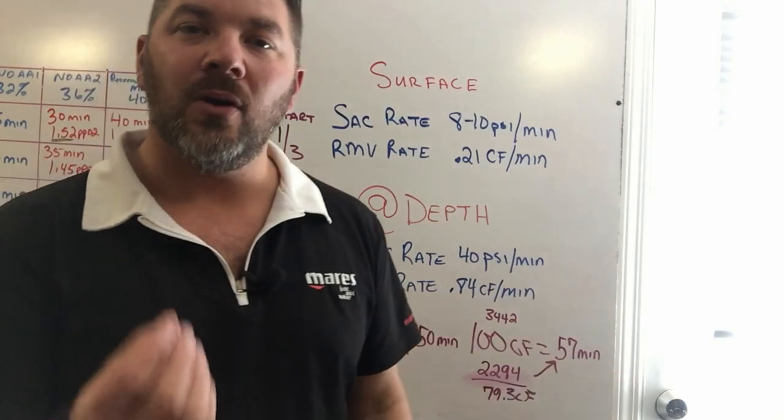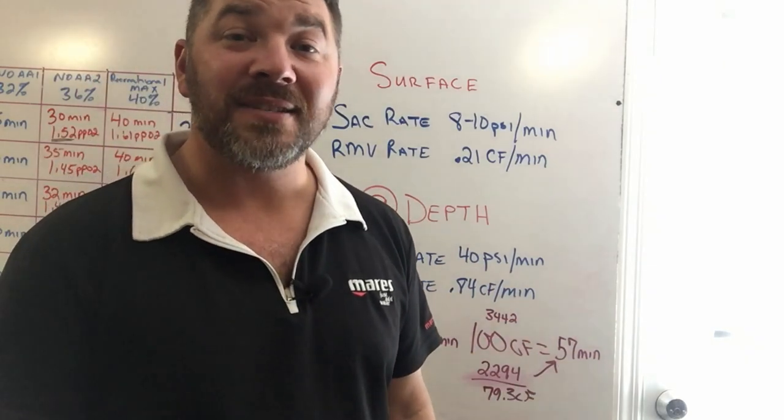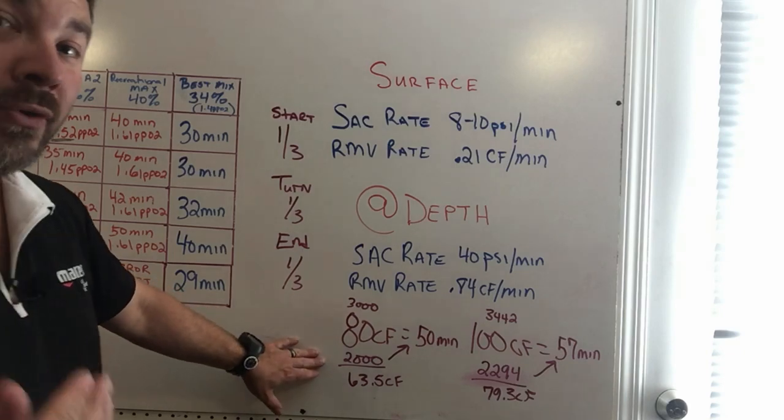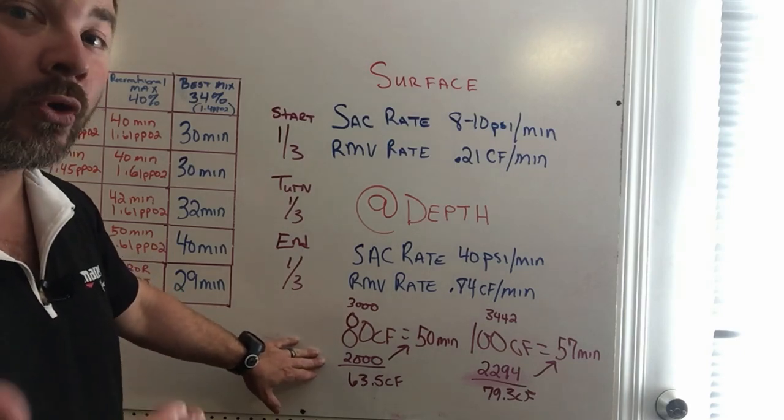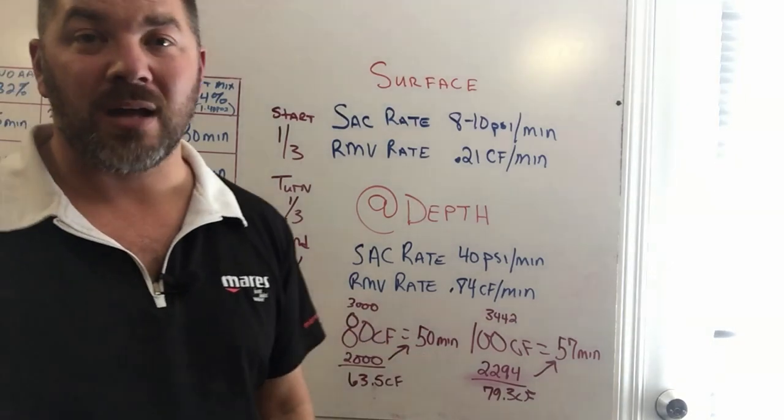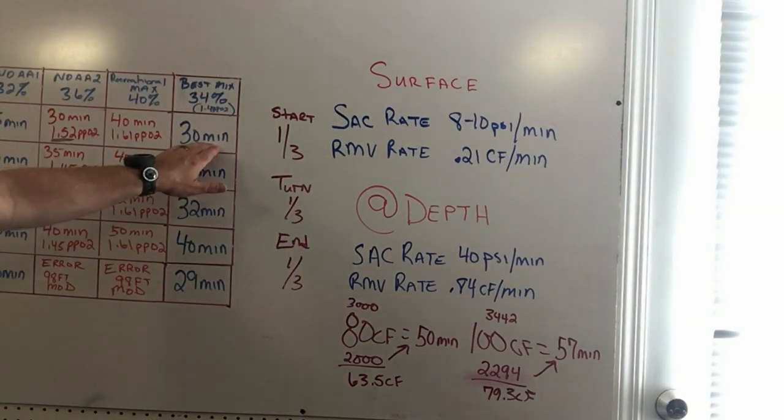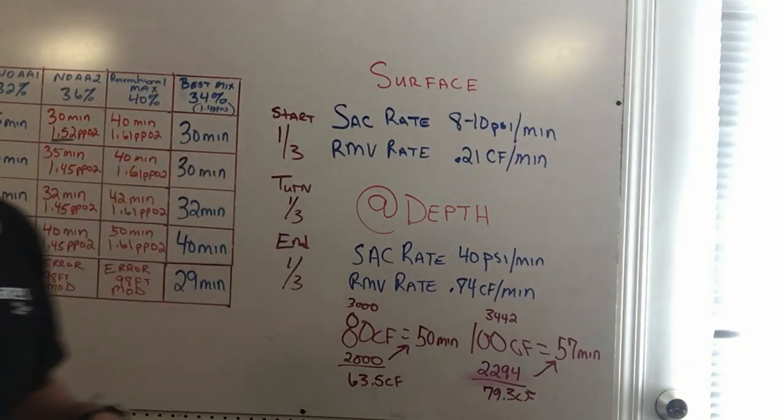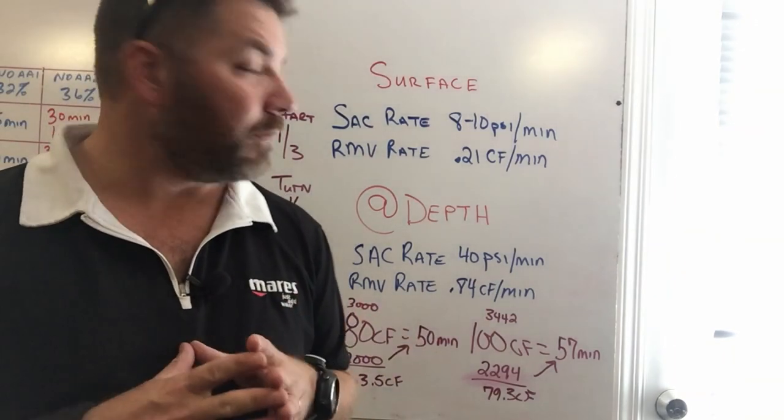So now, how long would each of these cylinders last based off the rule of thirds? Well the 80 cubic foot with only 2000 PSI of workable or usable gas is actually going to still give me 50 minutes of bottom time, which is plenty of gas even having enough for reserve to make a 30 minute dive at that 100 foot mark.